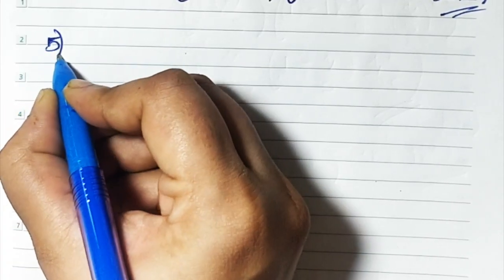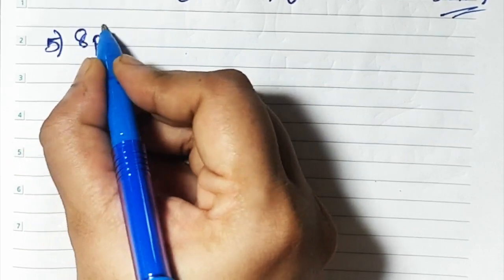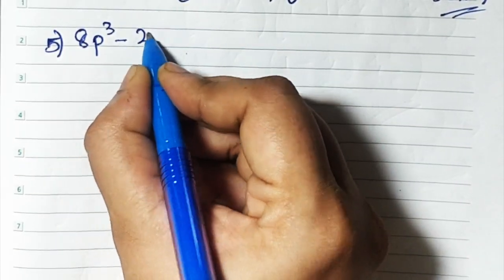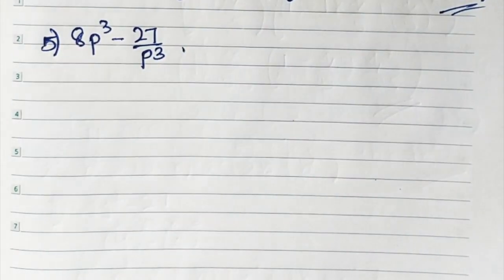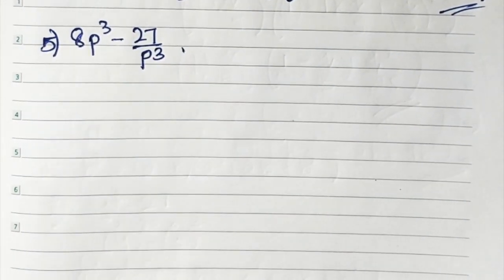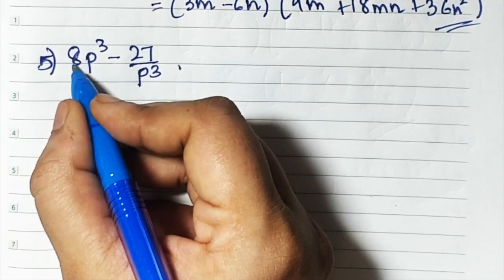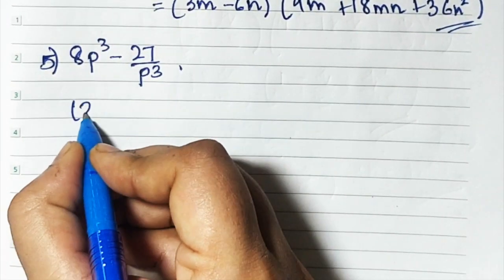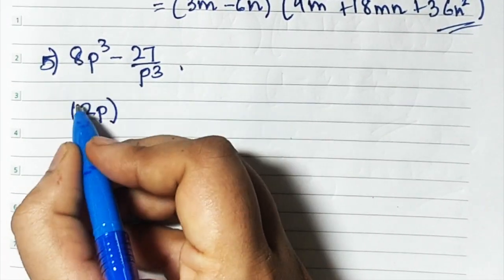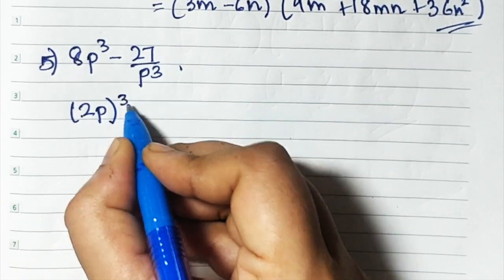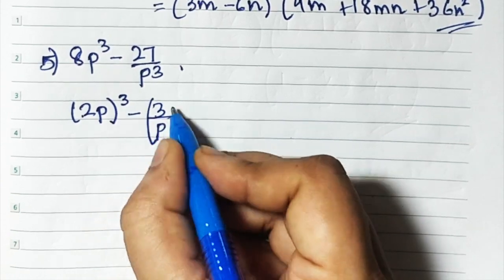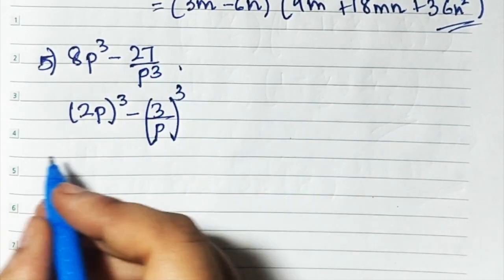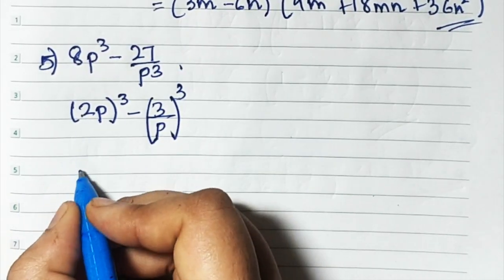Now I will do sum number 5. Sum number 5 is 8p cube minus 27 upon p cube. Here, for 8 we can take 2p because the cube of 2 is 8, so we write (2p) cube. And 27 is the cube of 3, so we write (3/p) cube.